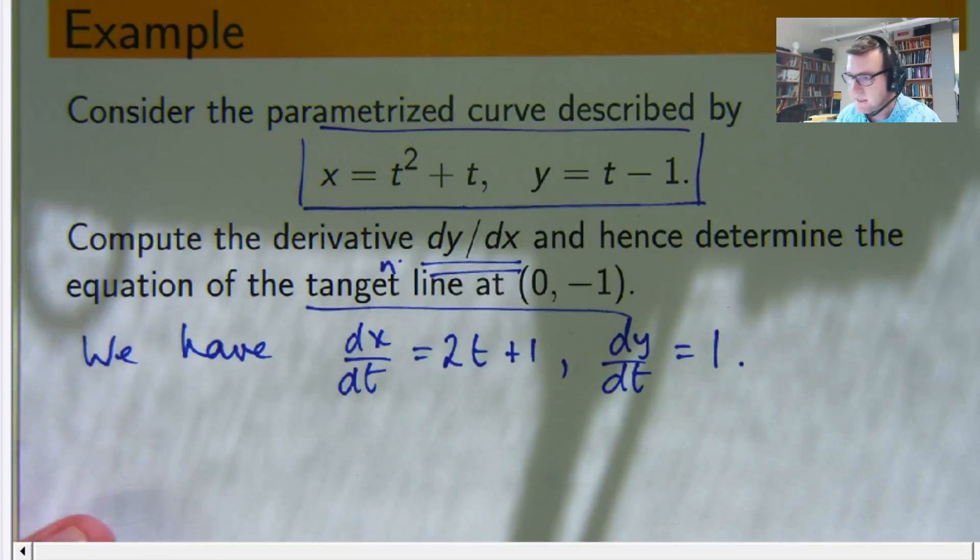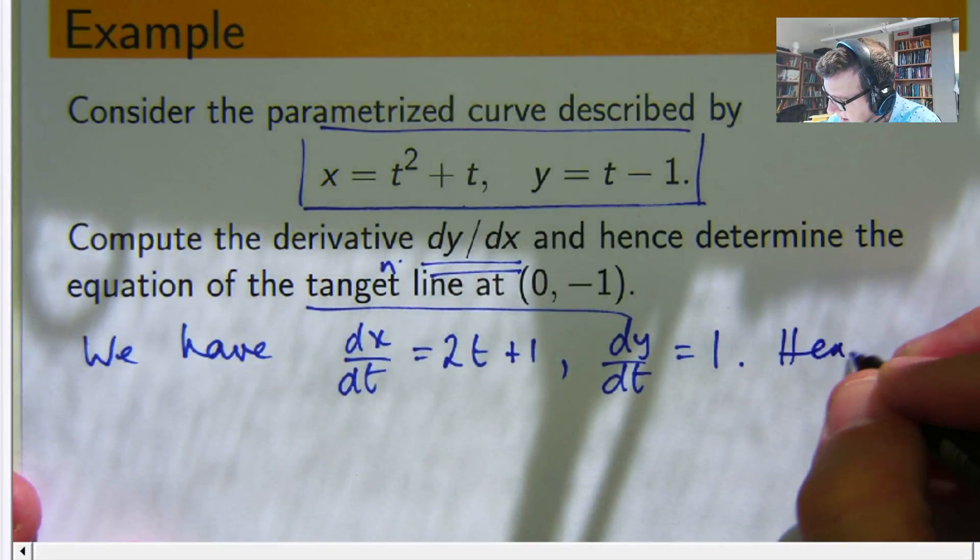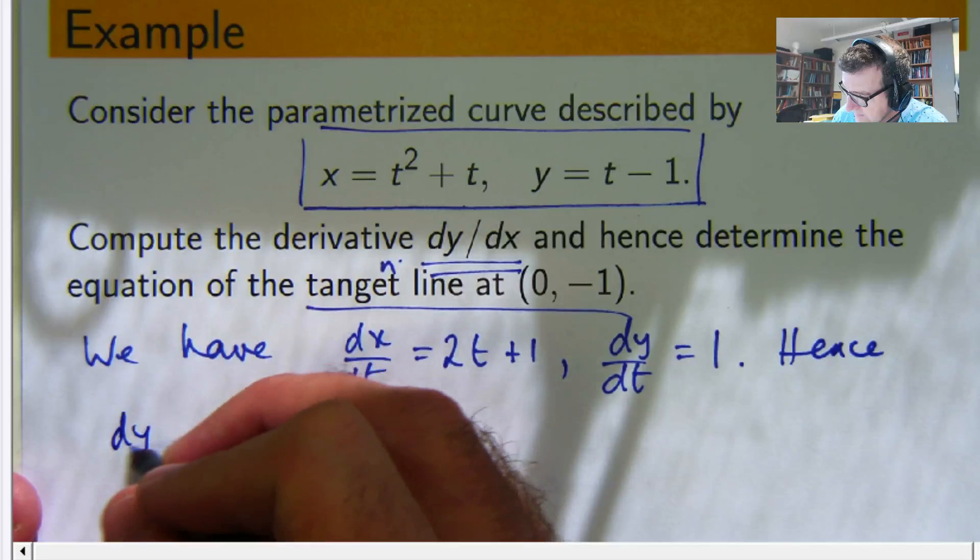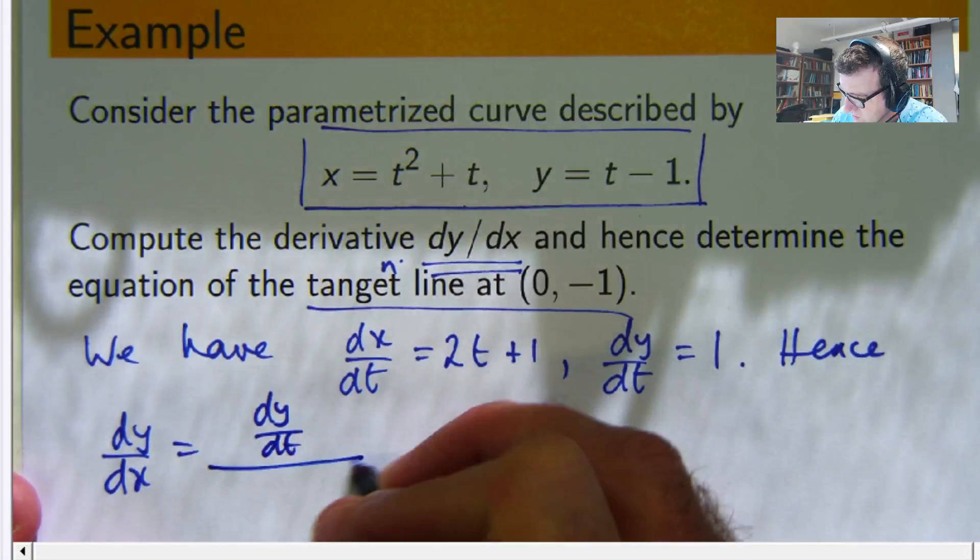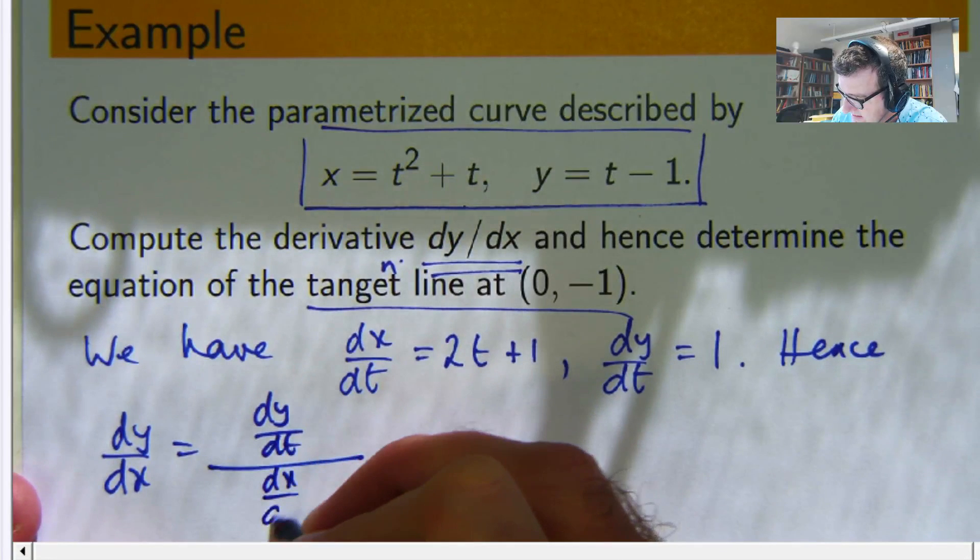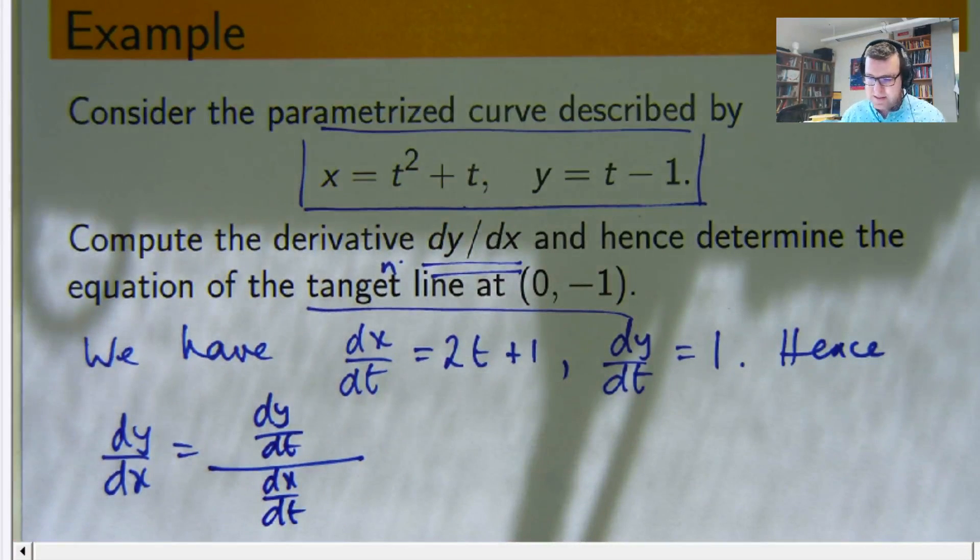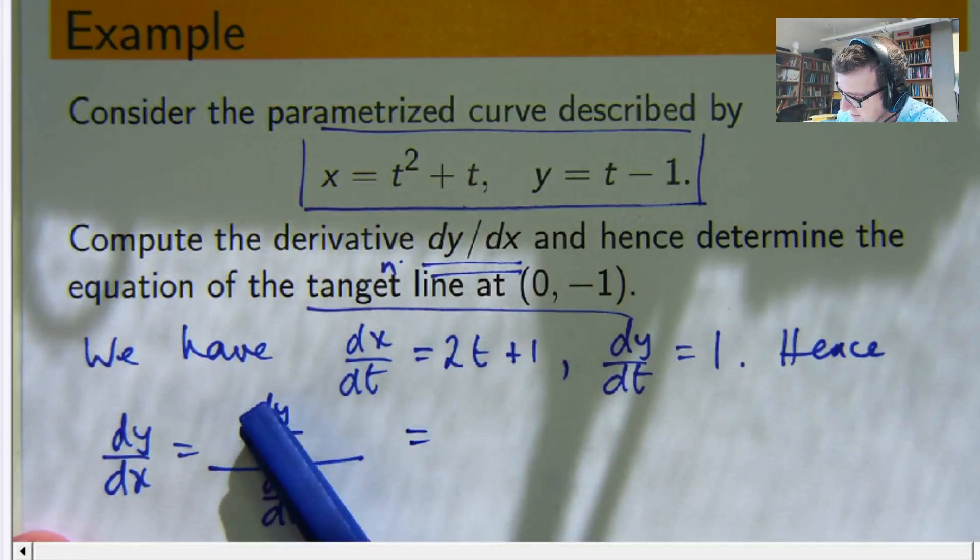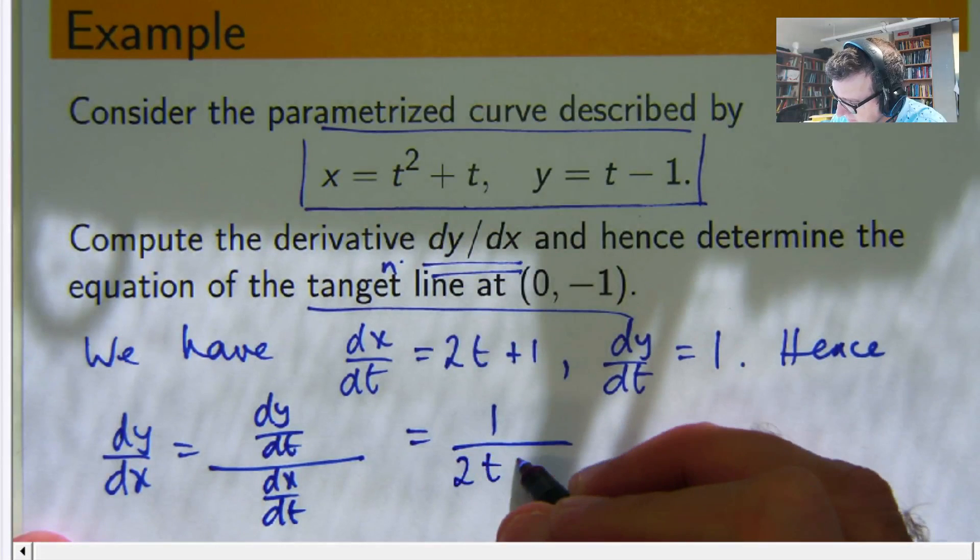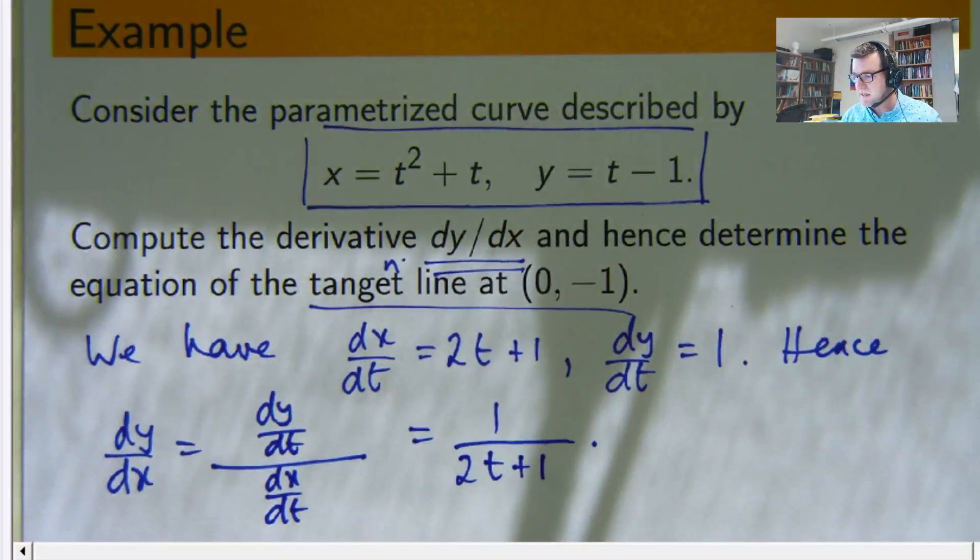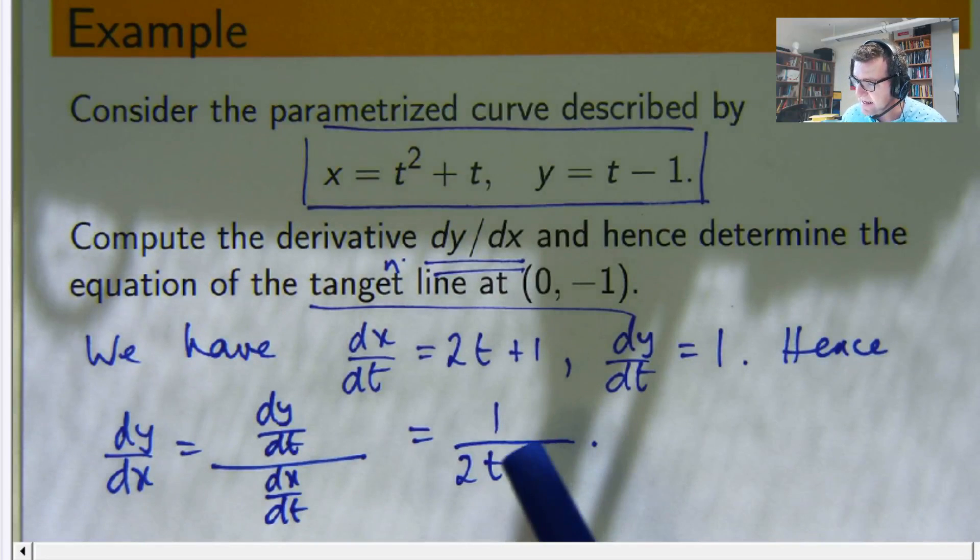So using our little formula, it's dy/dt all over dx/dt. The top part will be 1. The bottom part will be 2t plus 1. So there we have a derivative in terms of t.